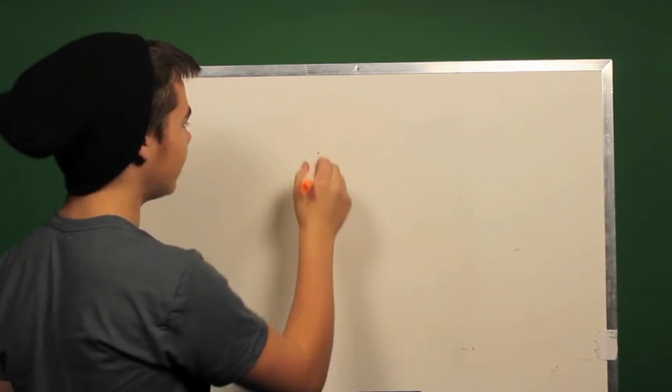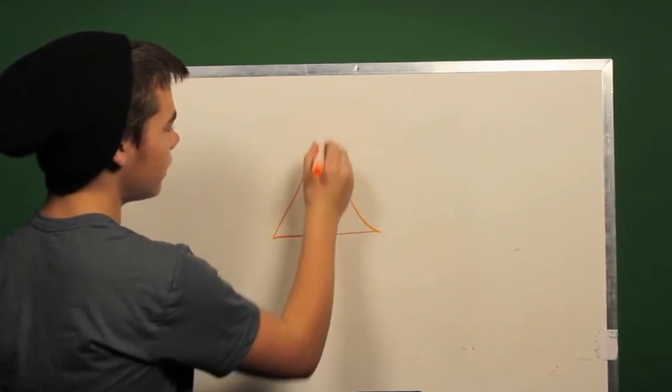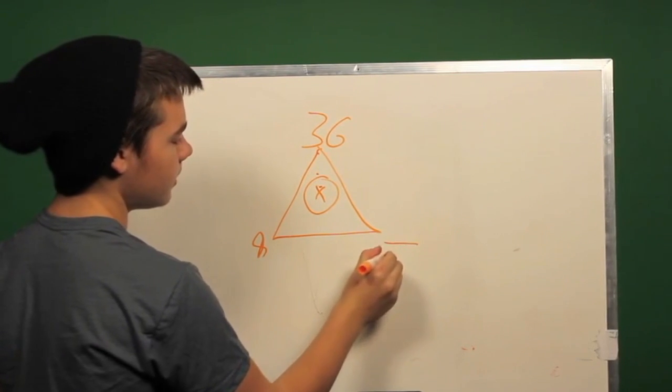So this is how we solve our multiplication triangles. If we have 36 and 9 and a blank,